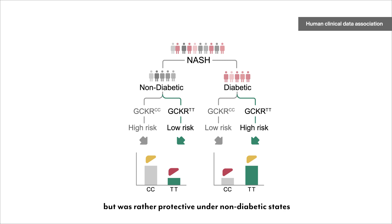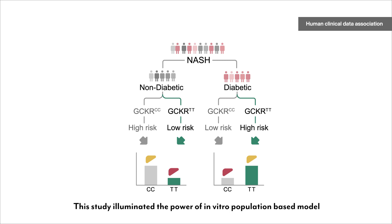The GCKR SNP was rather protective under non-diabetic states. This study illuminated the power of an in vitro population-based model to study metabolic-associated genetic traits.